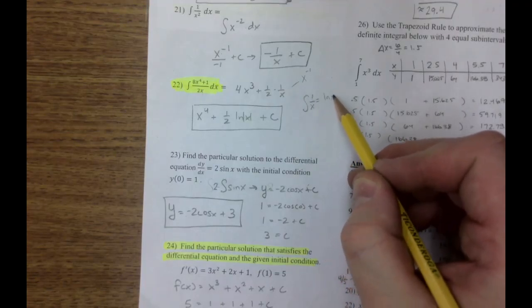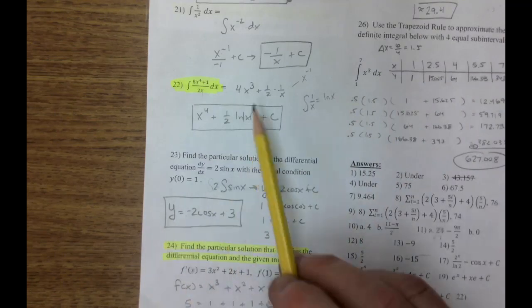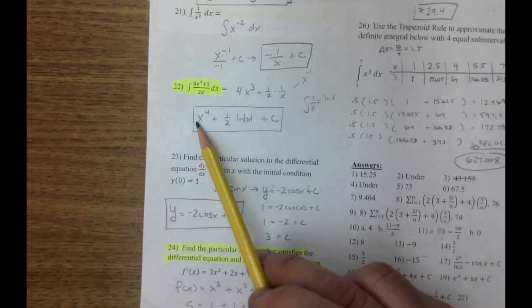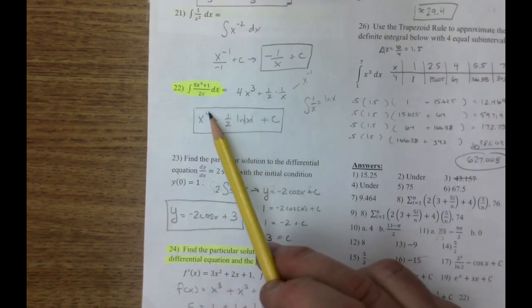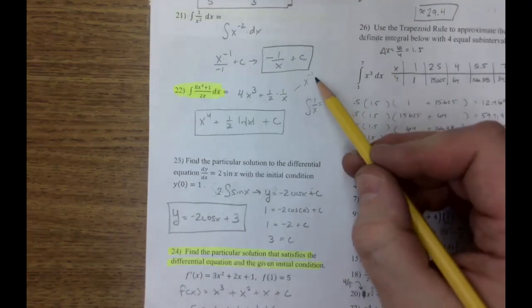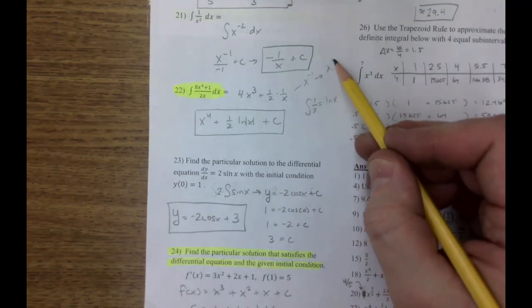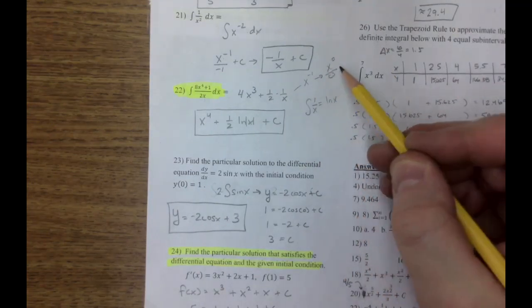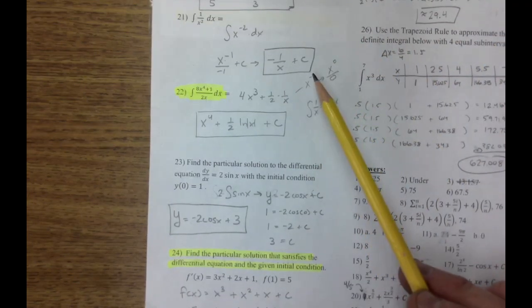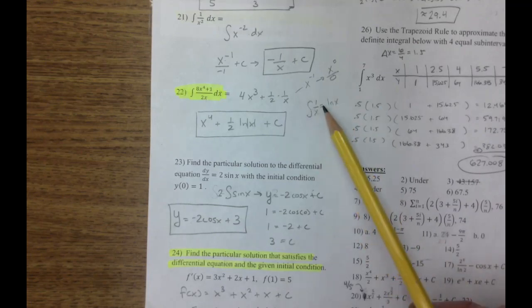We can use the reverse power rule here. We can add one and divide by four. So this goes up to four. Fours go away. However, if I try and add one to this, I get X to the zero divided by zero, which is not allowed. So that's why the reverse power rule does not work here. You have to use integration, or you have to use this integration rule.